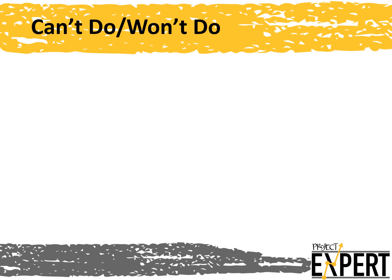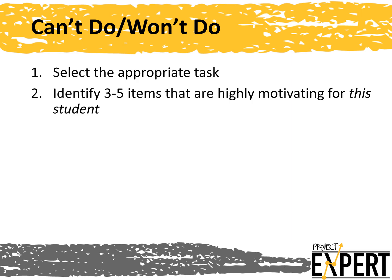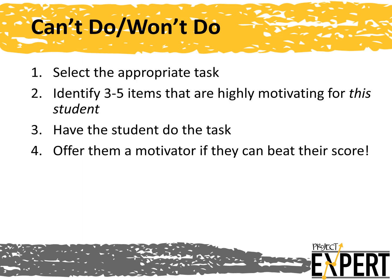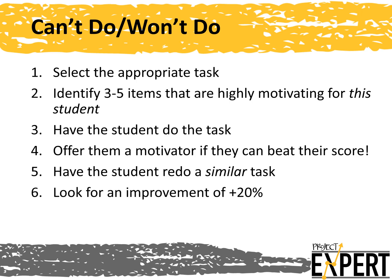A can't do/won't do assessment disentangles skill needs from motivation needs. First, select the appropriate task—if a student seems to be unmotivated when reading passages, you can use ORF probes. Then select a number of items that are highly motivating for this particular student. Remember, reinforcers are not inherently reinforcing; it all depends on the person. Next, have the student do the task and record their score. Then tell them they'll get a reward if they can beat their score and have the student do it again. If they improve their score by more than 20% when highly motivated, that suggests you may need to explore motivational supports. If they can't improve their score significantly, they are likely performing at their ability level.